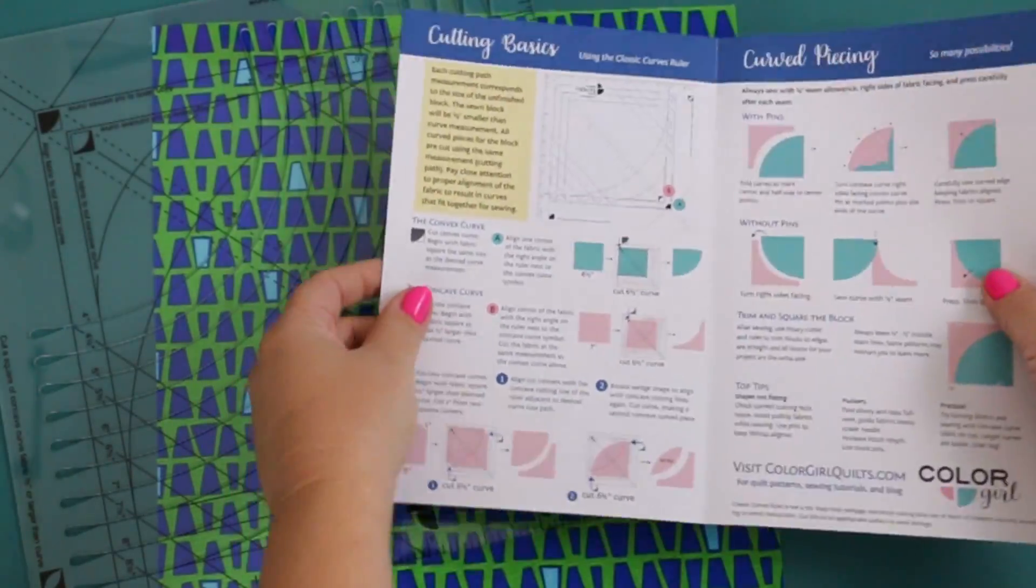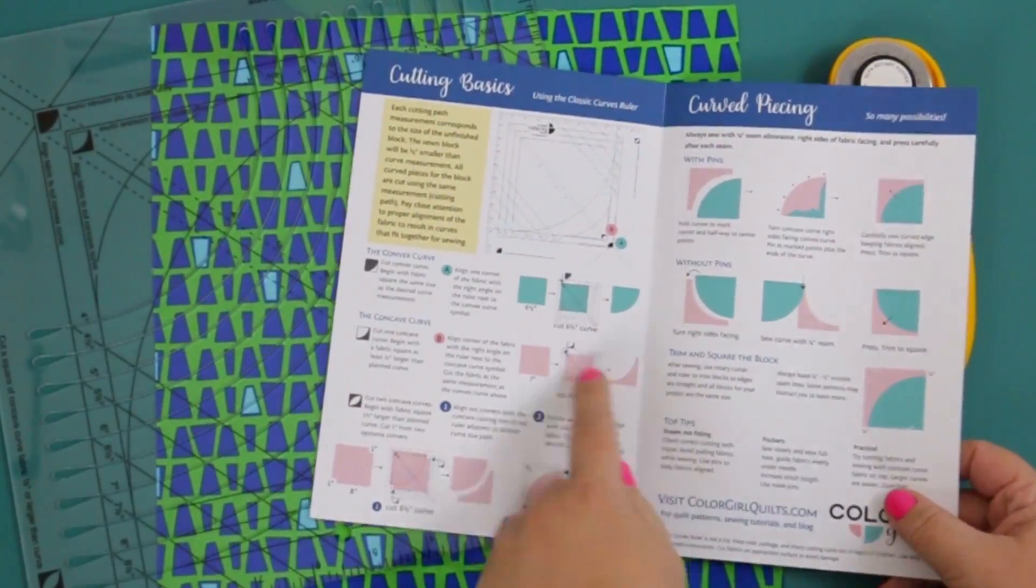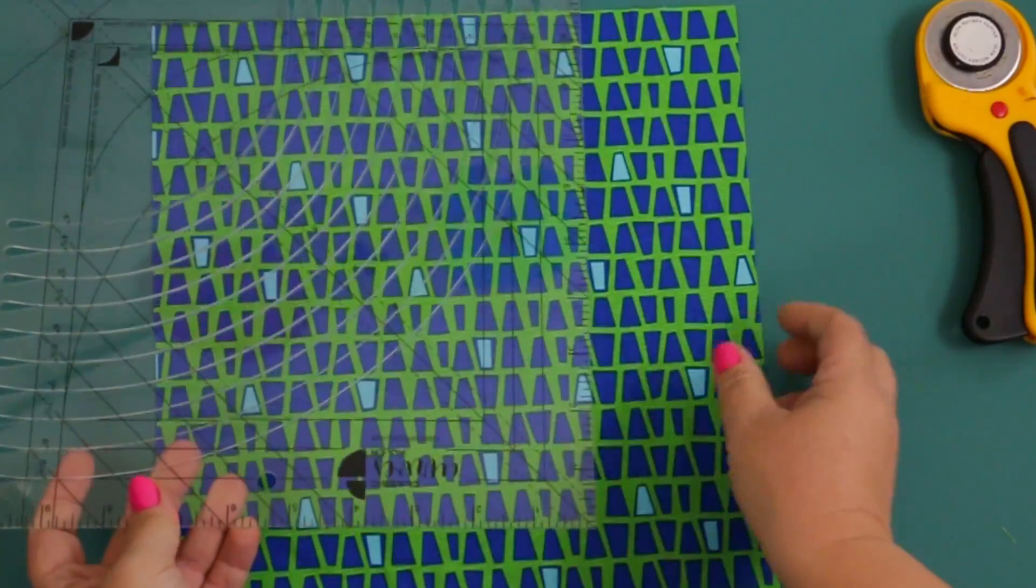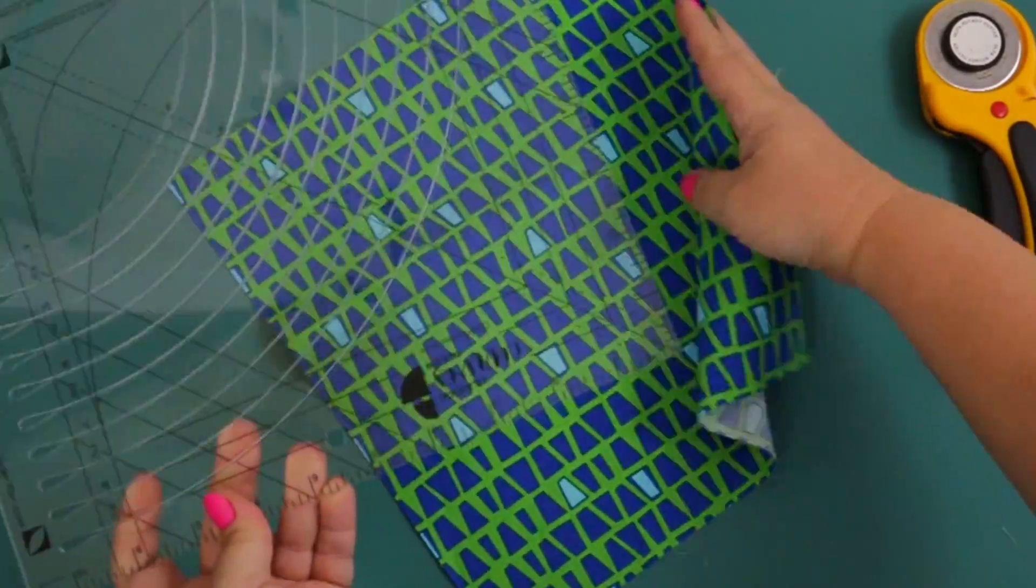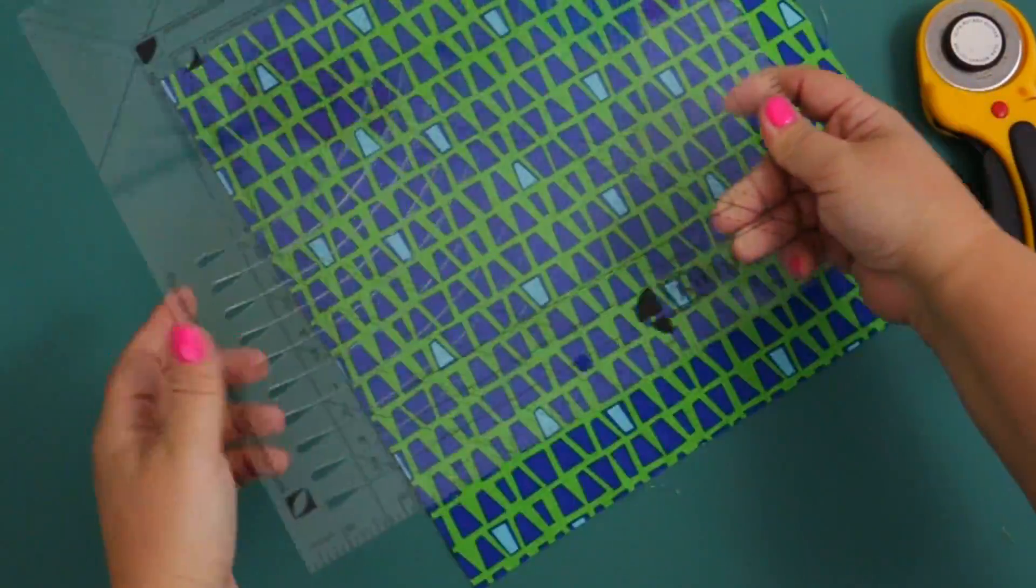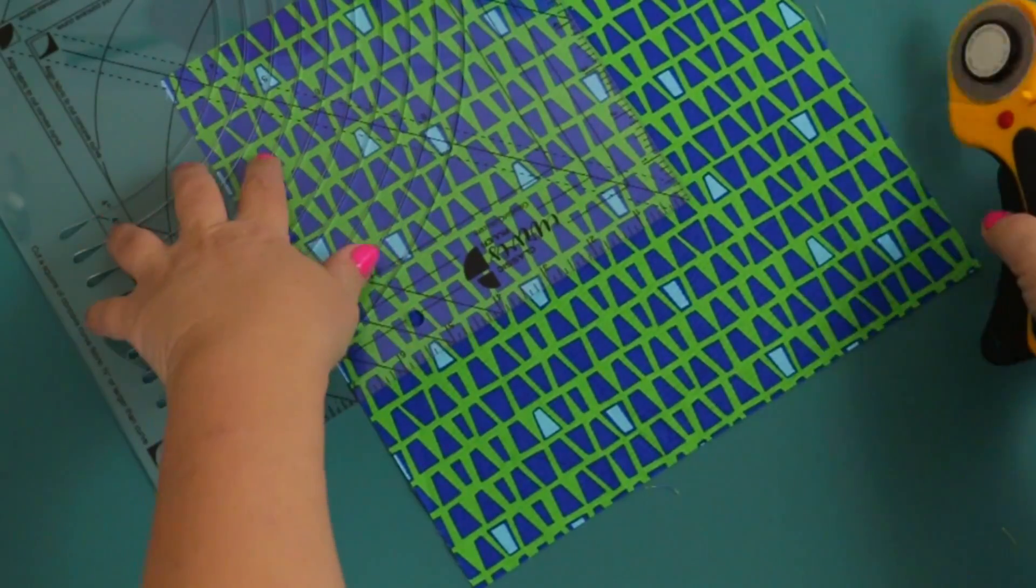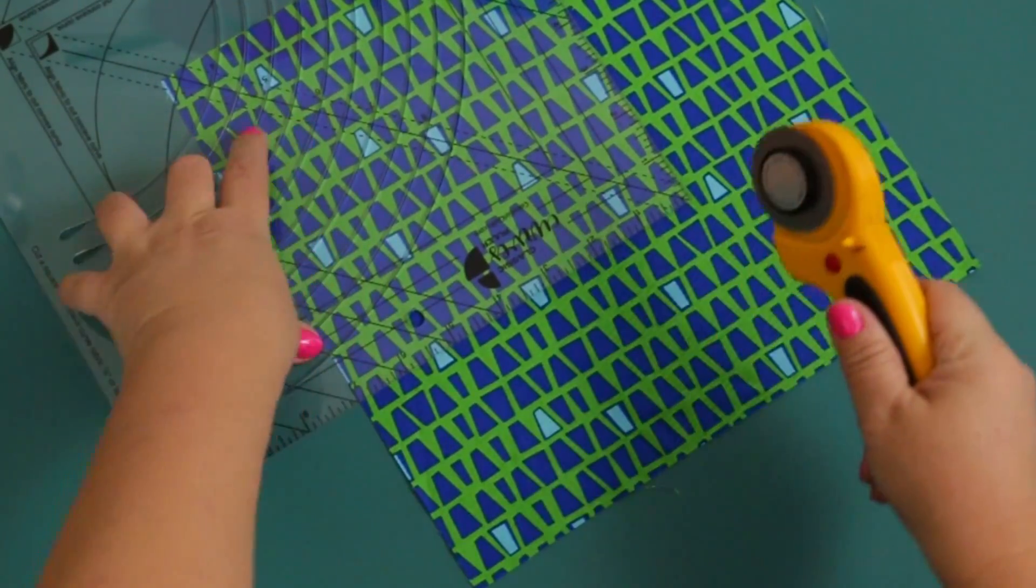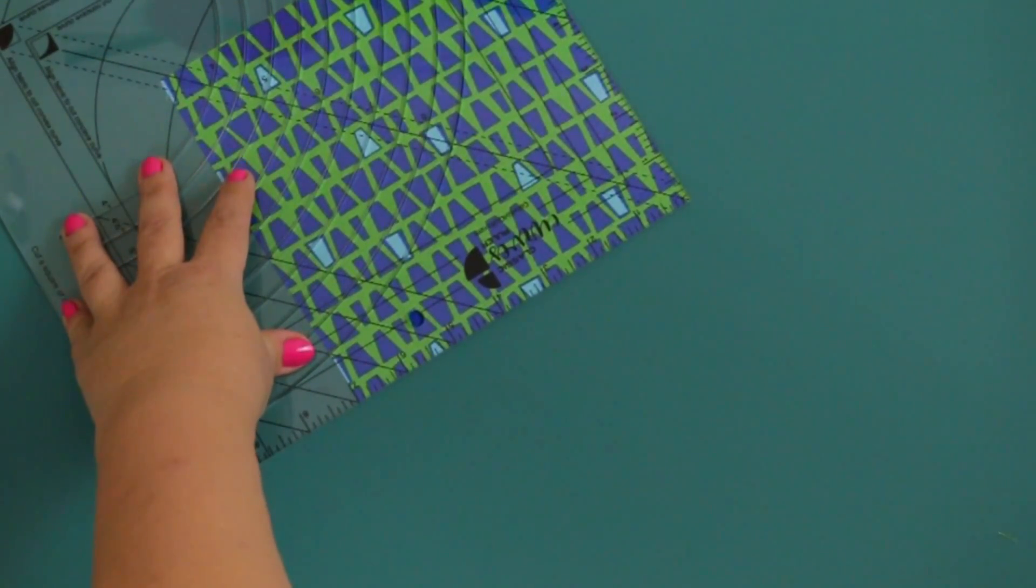We're going to follow the second part of the instructions to create the concave curve. In order to create the concave curve, you're going to want to begin with a fabric square that's at least a 1/2-inch larger than the planned curve. So in this case, we are going to cut a 7-inch square.